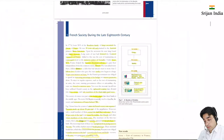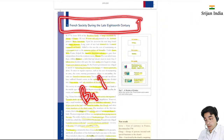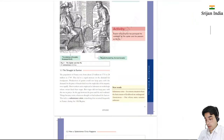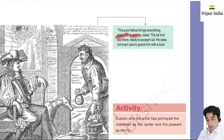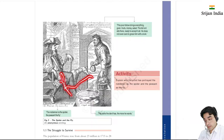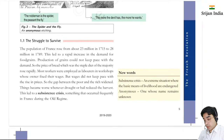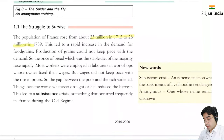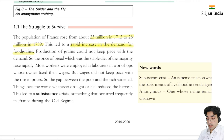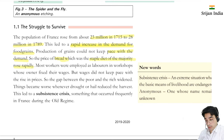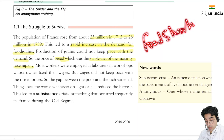This was France's late 18th century society before the revolution - this was the backstory. The poor were bringing everything: grain, fruits, money - there was a lot of discrimination. Artists portrayed the nobleman as a spider and the peasant as a fly. The struggle to survive: the population of France grew from 23 million in 1715 to 28 million in 1789. This led to a rapid increase in demand for food grain, but production could not keep pace with demand. The price of bread, which was the staple diet of the majority, rose rapidly.